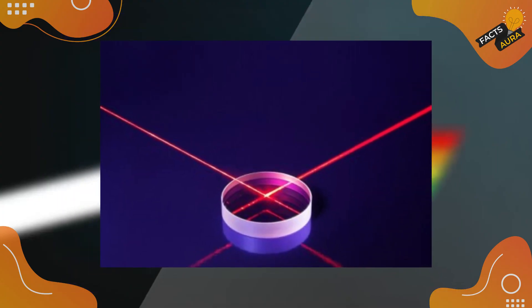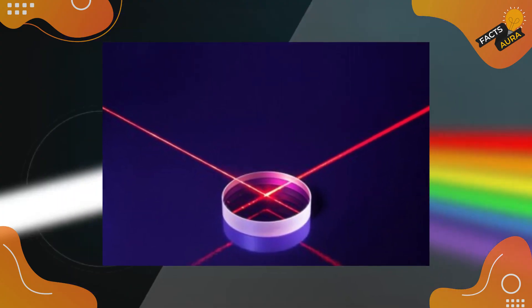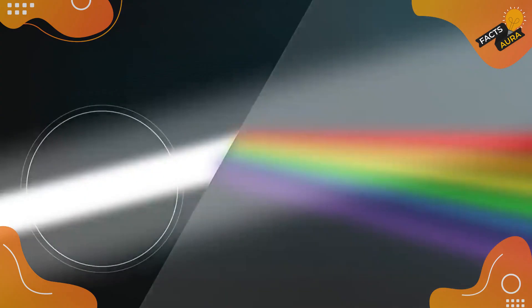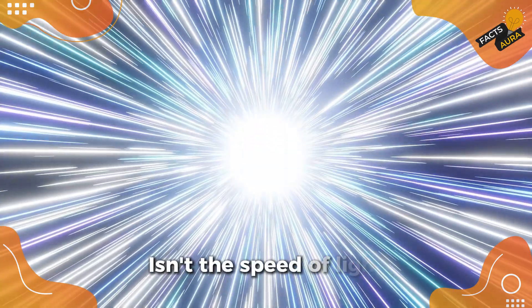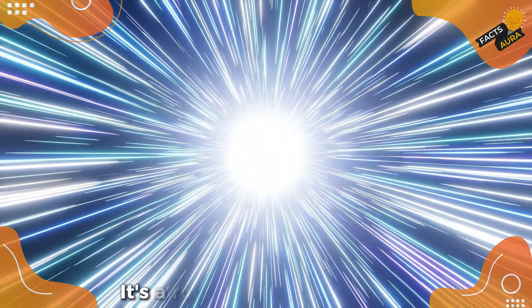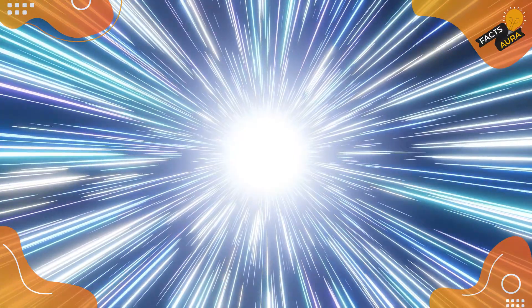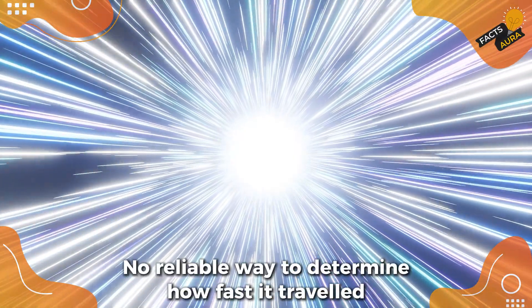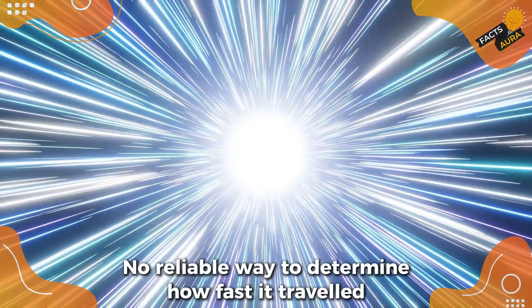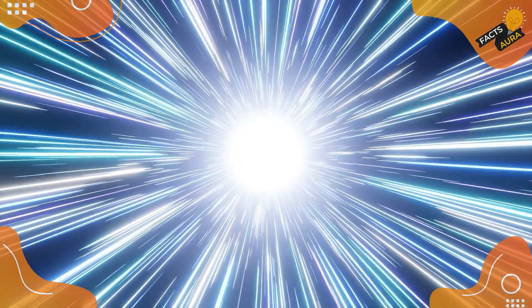Imagine shining a flashlight to a mirror and timing how long it takes for the beam to return. The result you get isn't the speed of light in one direction—it's a round-trip measurement. And here's the mystery: we have no reliable way to determine how fast it traveled one way without relying on this round-trip method.